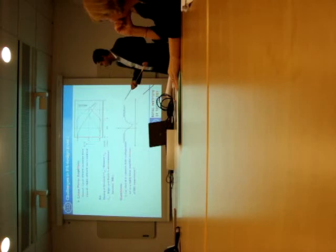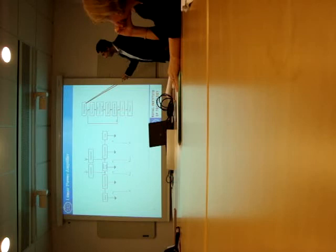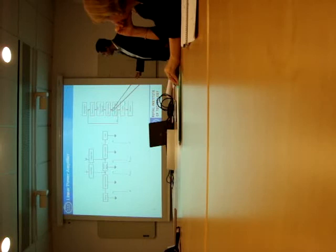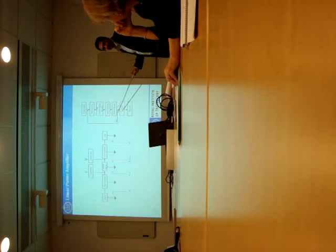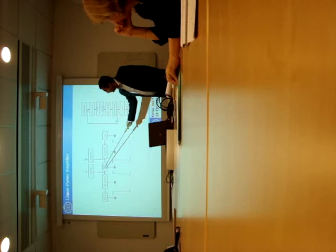This is the general design flow of a linear power amplifier. It starts with design specifications, then determining the optimum impedance conditions. Then we design the load transformation network, input matching network, and iterate until we get the desired results, followed by layout and measurements. A simple block diagram of the amplifier shows an active device, the output load transformation network, the input and stability network, and the output and input bias voltages.